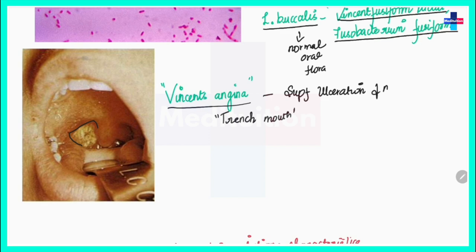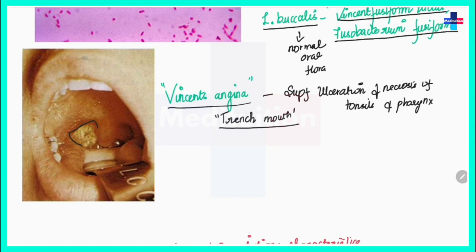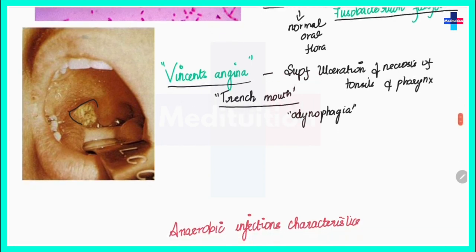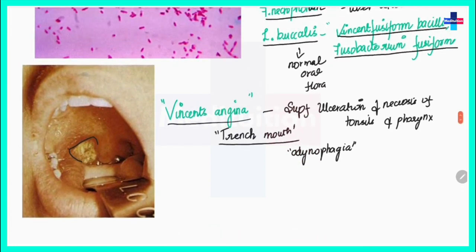In Vincent's angina there is superficial ulceration and necrosis of the tonsils and pharynx. This can also result in pseudomembrane formation. There is foul-smelling breath — hence the name trench mouth — along with pain during swallowing (odynophagia) and lymphadenopathy of the submandibular lymph nodes.